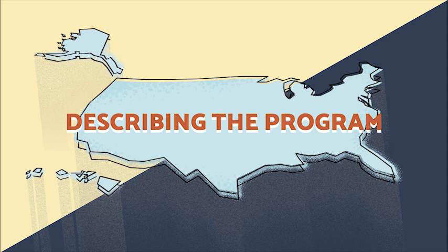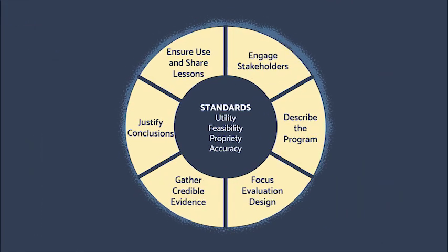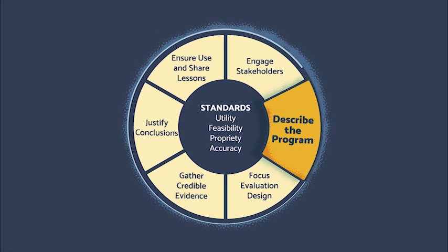Describing the program appears on screen across an illustrated model of the United States. Describing the program is the second step in the CDC evaluation framework. In this step, we describe clearly what our program does and depict visually with a logic model the outcomes we expect to achieve as a result of our activities.